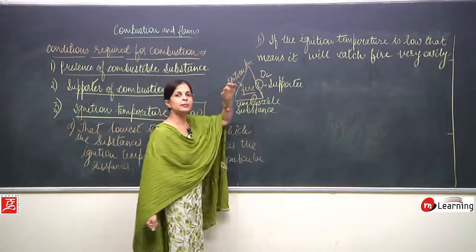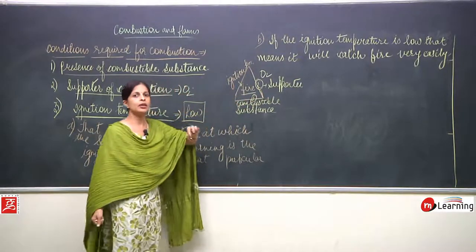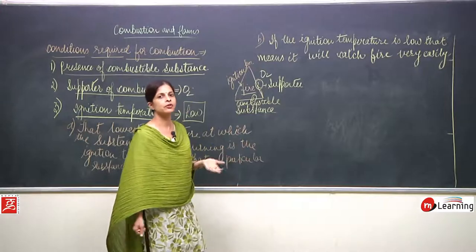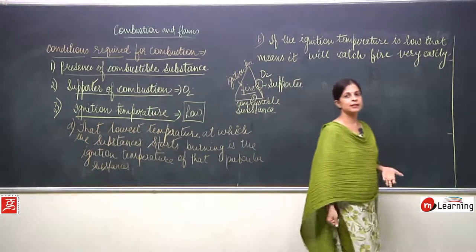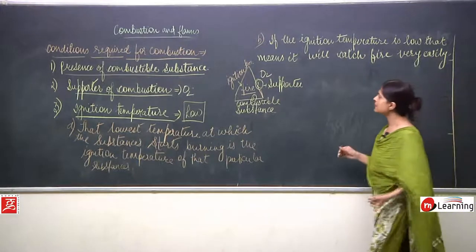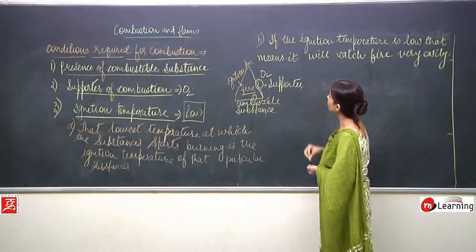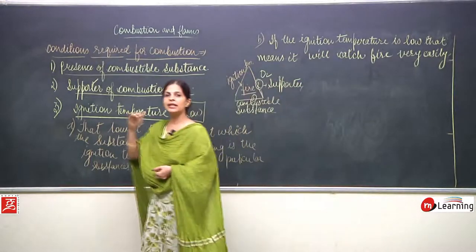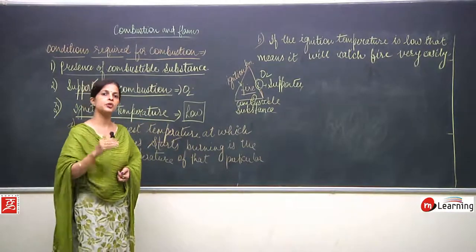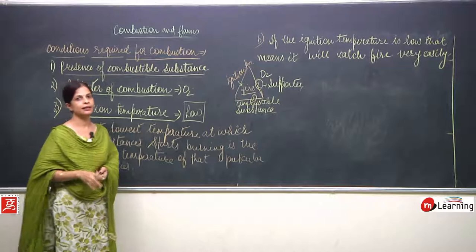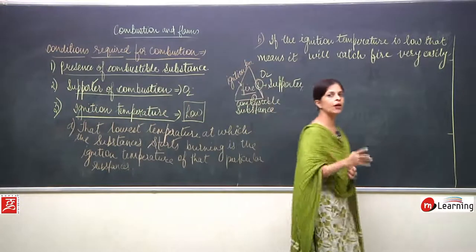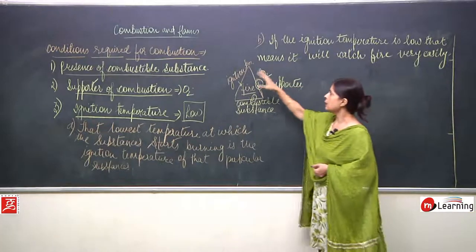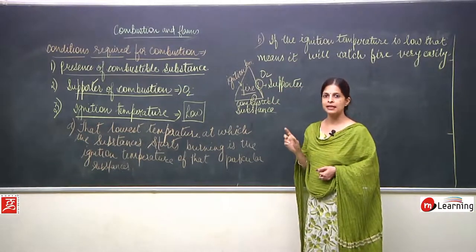So these are the three pillars — three things required for a substance to catch fire. First, combustible substance: until unless you have the particular substance, how will you burn it? Second, supporter: without oxygen no substance can burn. Third, ignition temperature. Let's see what happens if we remove any one of these.